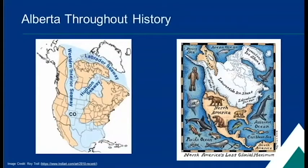Earth has changed a lot since then, and it continues to change today. There were periods where it was warm and tropical, where Alberta was covered by shallow seas, like the Western Interior Seaway, as you can see in the left image. And there were ice ages, where much of Earth's surface was covered by glaciers, like the Laurentide and the Cordilleran ice sheets, as you can see on the right picture. When we talk about everything that has happened on Earth since it's formed, we often reference something called the geologic time scale.